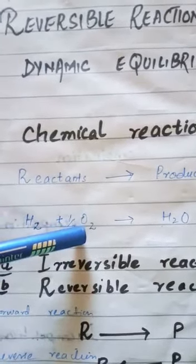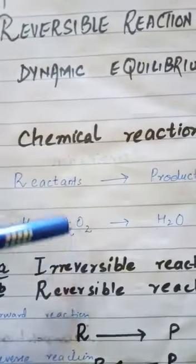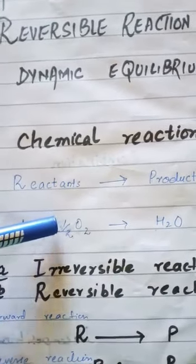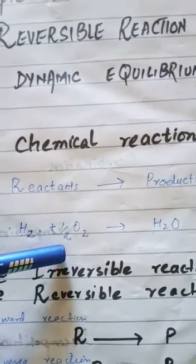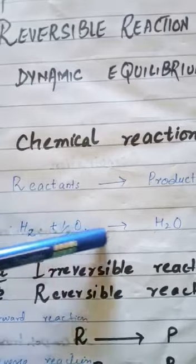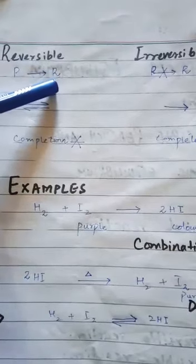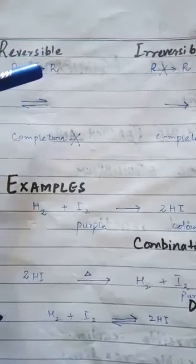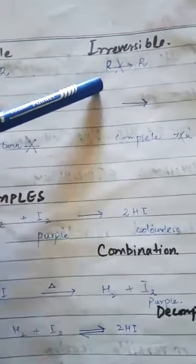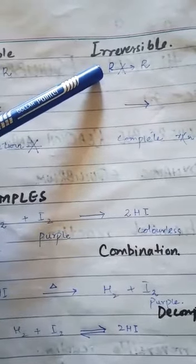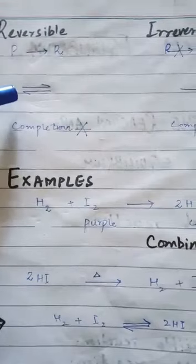In an irreversible reaction there is only a forward reaction — there is no reverse reaction, therefore it cannot be reversed and is known as an irreversible reaction. But in a reversible reaction there is both a forward and a reverse reaction, therefore it is known as a reversible reaction. The first difference is that in a reversible reaction the products which are formed get converted back into reactants, but in an irreversible reaction once the product is formed the reaction is complete and products do not convert back into reactants.